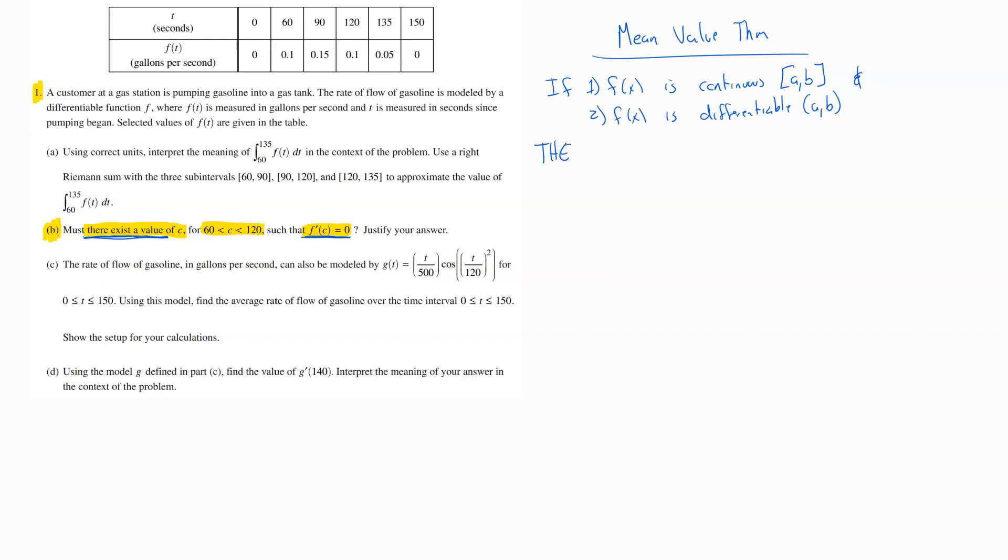If that's true, then we get to draw this conclusion. Then there is a value C, how convenient that we're talking about C here. There is a value C that is in between A and B, that is greater than A and less than B, such that